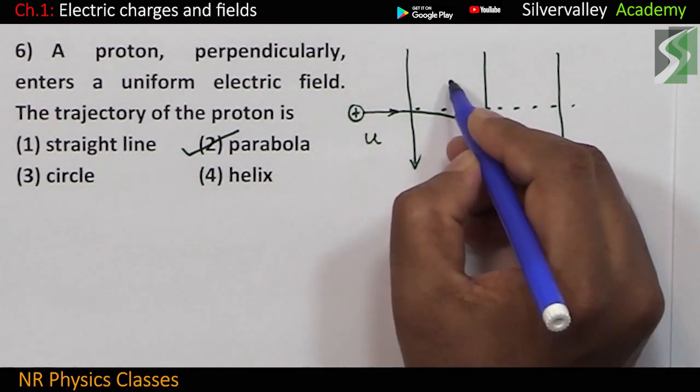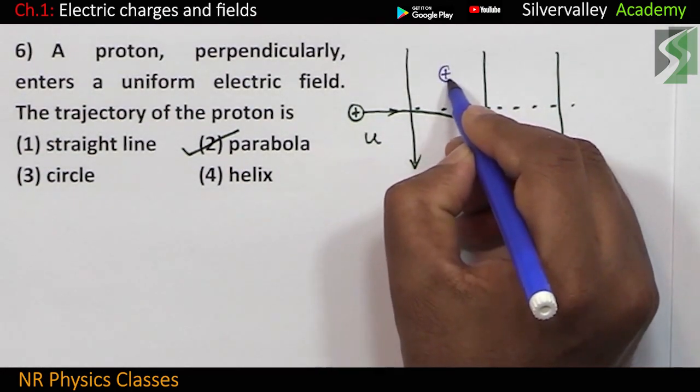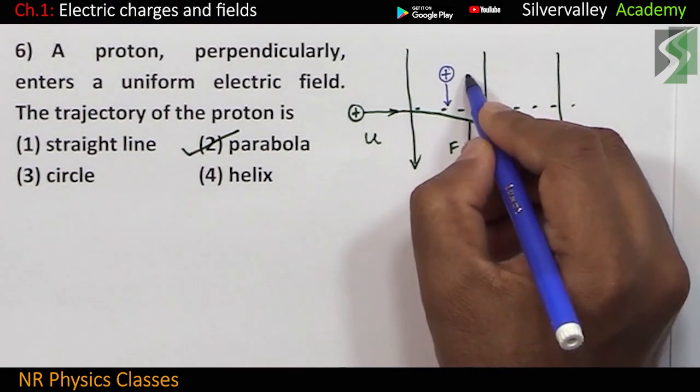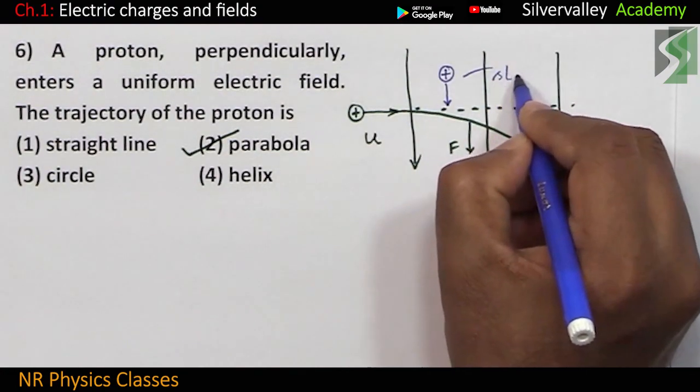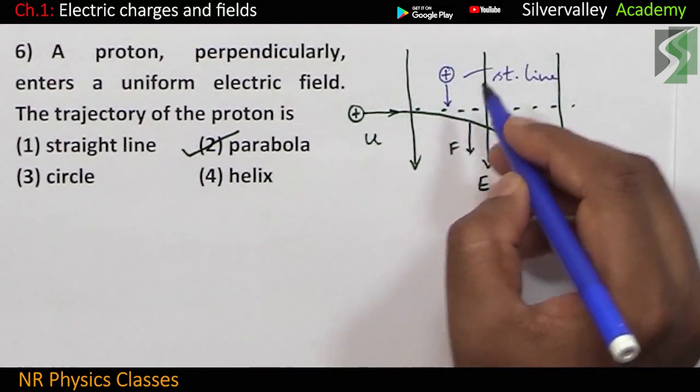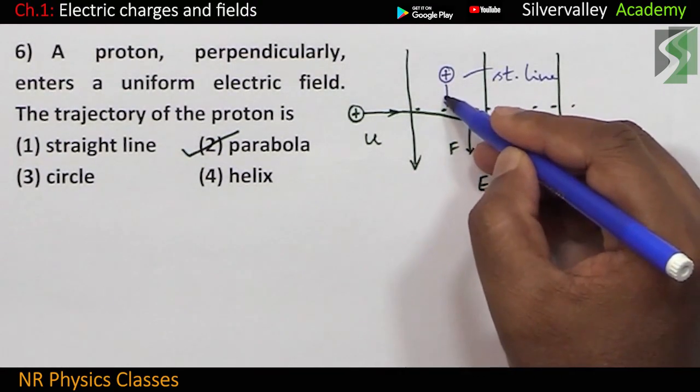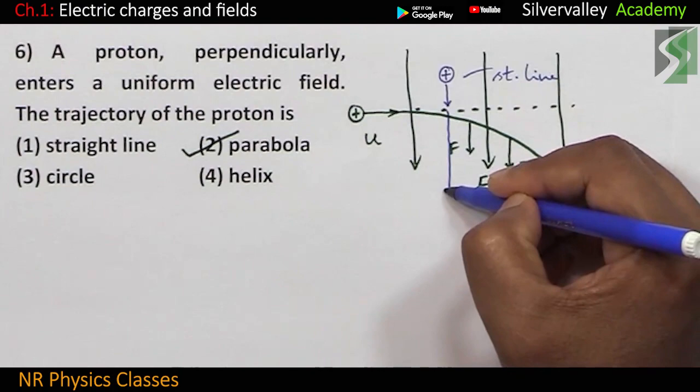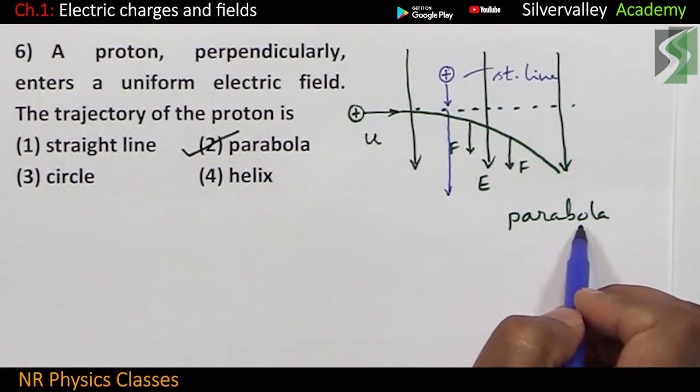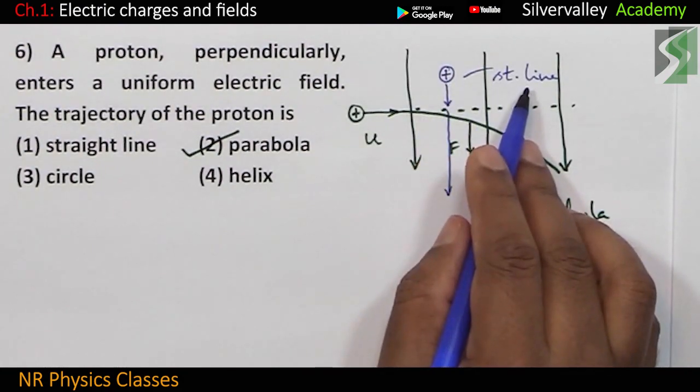Suppose the proton enters the electric field parallelly like this. Then path is a straight line. Because force is in the direction of electric field, so this continues to travel like this. So, it is perpendicularly, perpendicularly, parabola, parallelly, straight line.